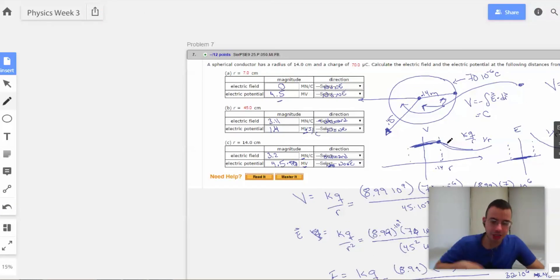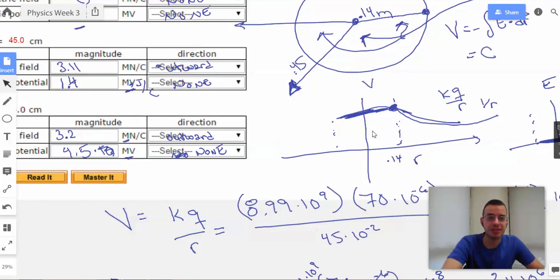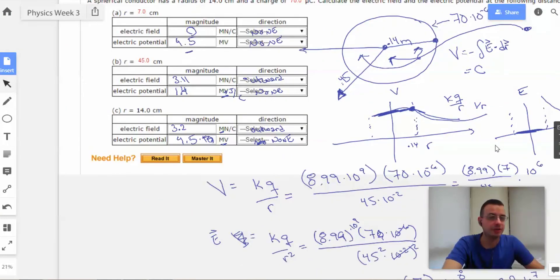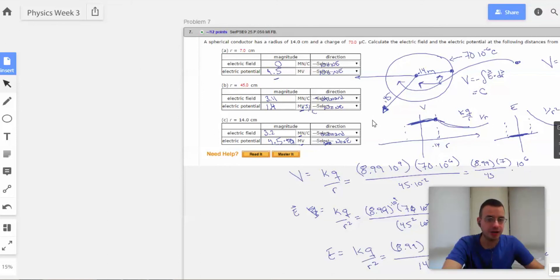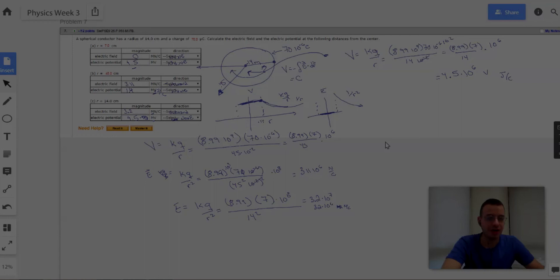So the key concept they're trying to get you to understand here is the electric potential inside a sphere is not necessarily 0 even though the electric field is. Alright. This whole work is shaping up pretty well. Let's move on to number 8.